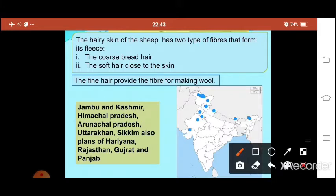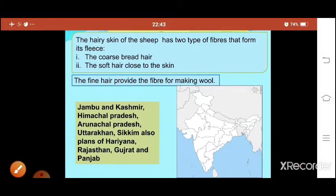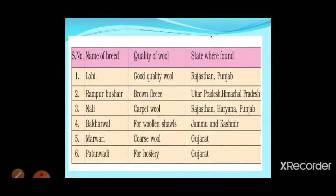To get wool from sheep, we need to rear them — that means taking care of them, feeding them, and breeding them. Different breeds of sheep give different quality wool. In India, the breed Lohi gives good quality wool and is found in Rajasthan and Punjab. Rampur Bushai gives brown-colored wool from Uttar Pradesh and Himachal Pradesh. Nali gives carpet wool — slightly rough — from Rajasthan, Haryana, and Punjab.